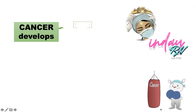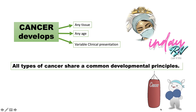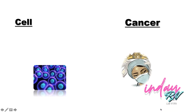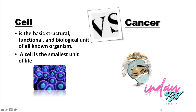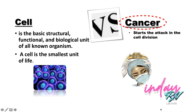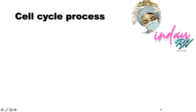Cancer develops in any tissue and at any age, and the clinical presentation is variable. All types of cancer share common developmental principles — there is a gradual acquisition of errors in genes important in cell division. That's why, before we discuss the chemotherapy agents, we need to see the connection between the cell and cancer. The cell is the basic structural, functional, and biological unit of all known organisms, known as the smallest unit of life. Cancer attacks this smallest unit of life, starting at cell division. Most chemotherapeutic agents attack or have a mechanism in cell division, which is why it is vital to discuss the cell cycle process first.